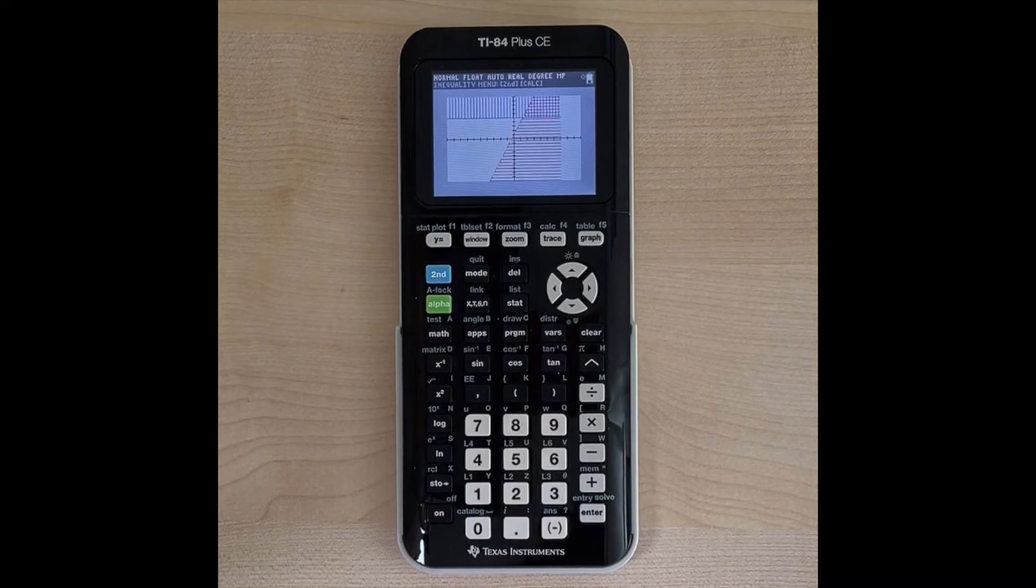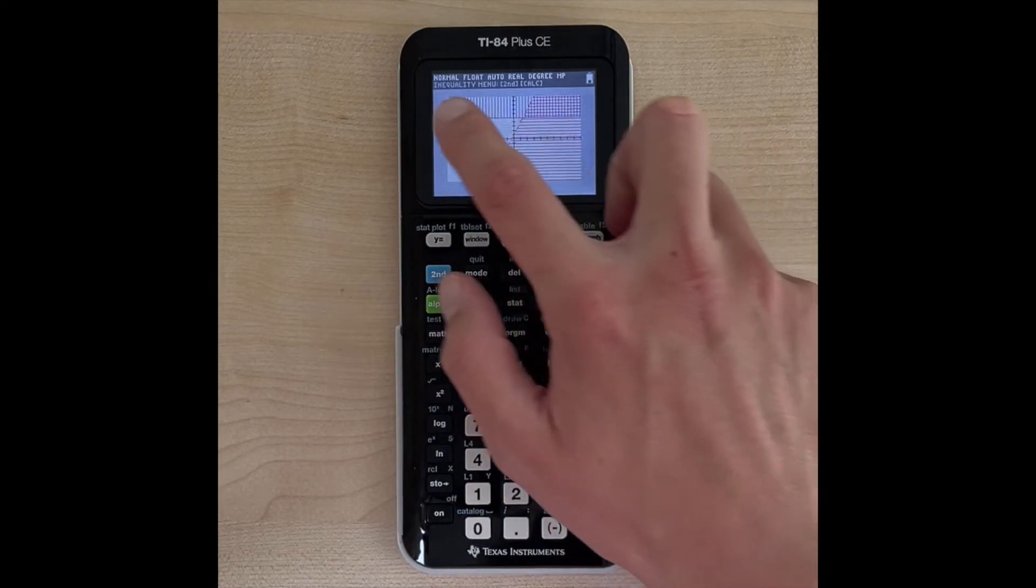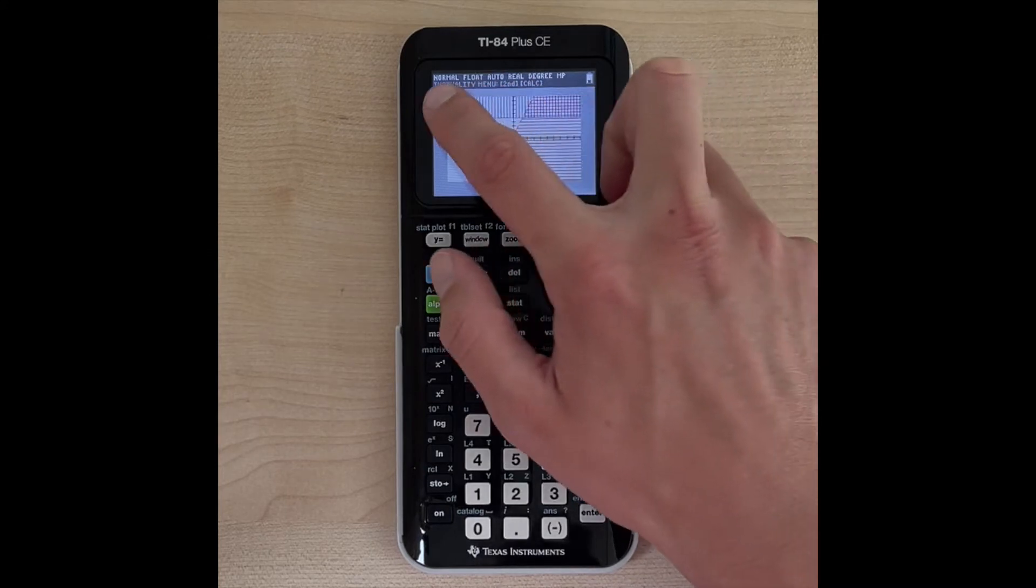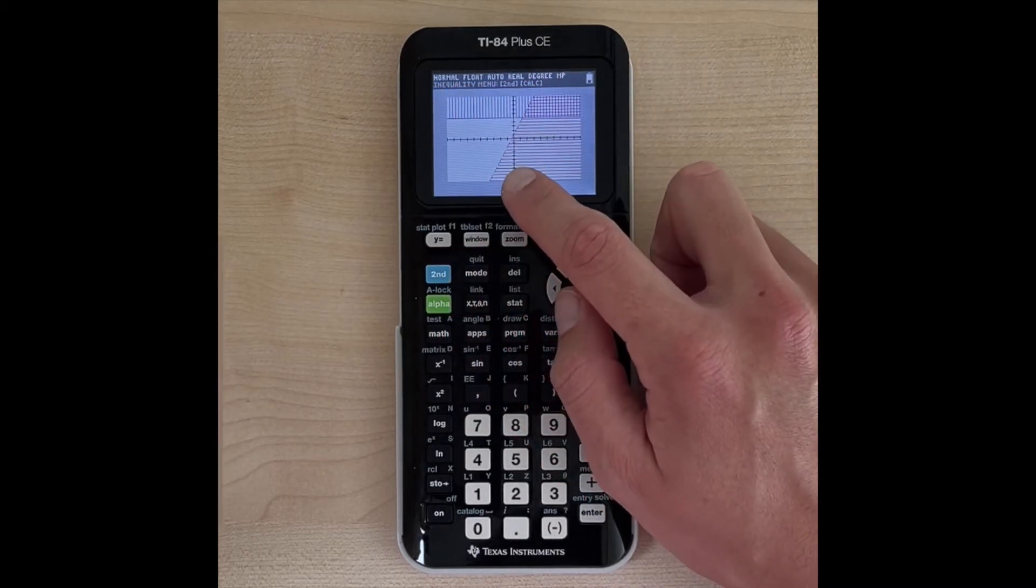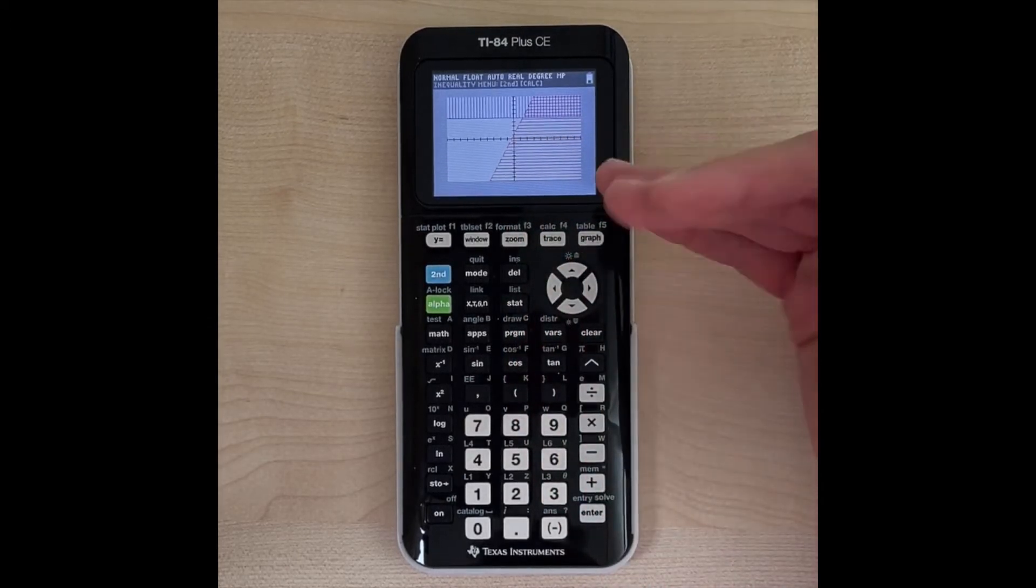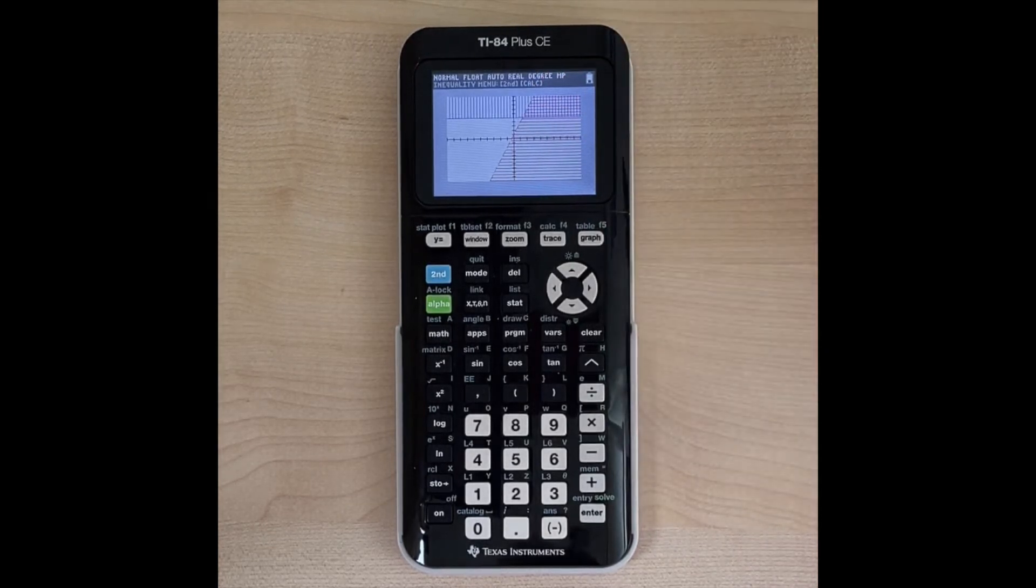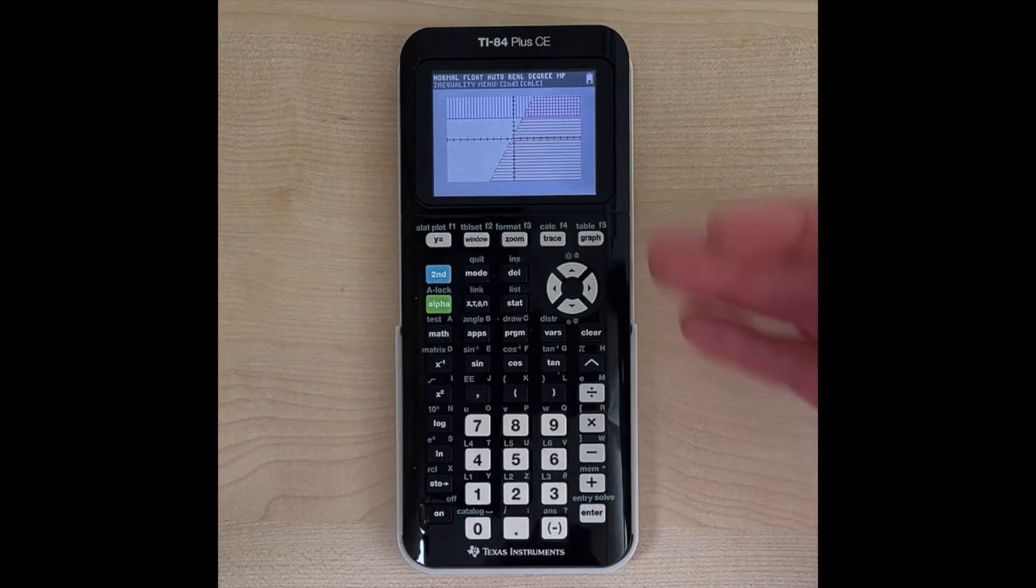And so once we graph this, our calculator is going to bring up the shading for us. So now we see the shading on y is greater than or equal to 5 up here as vertical bars, and we see the shading on y is less than 3x plus 1 as horizontal lines. So it's very easy to see the overlapping shading on the calculator because it looks like cross-hatching or it's like little squares, right? So the answer to this system would be this graph.